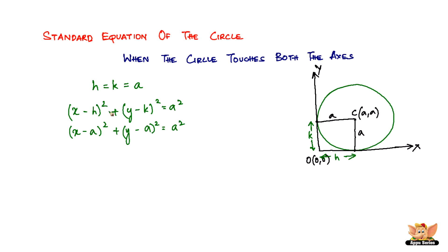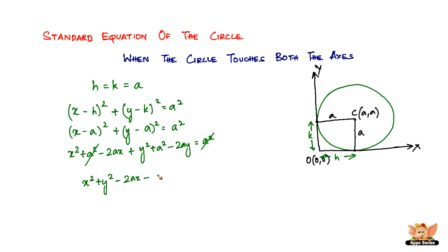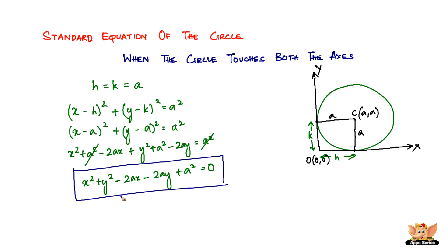Now let's expand and see what happens. (x minus a) squared is x squared plus a squared minus 2ax, and (y minus a) squared is y squared plus a squared minus 2ay, which equals a squared. One of the a squared terms gets cancelled, and then we are left with x squared plus y squared minus 2ax minus 2ay plus a squared equals 0. So this is the standard equation of the circle: x squared plus y squared minus 2ax minus 2ay plus a squared equals 0.